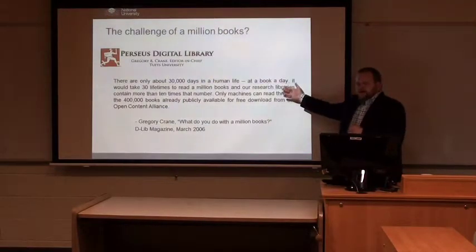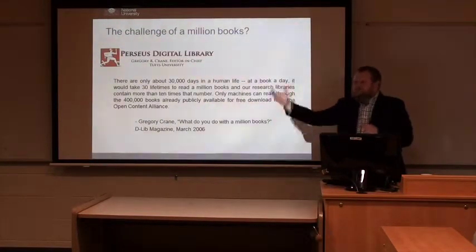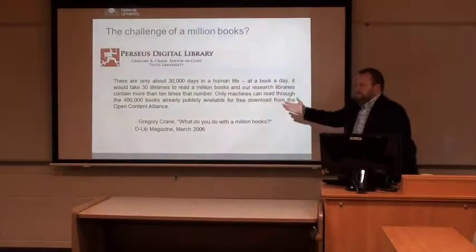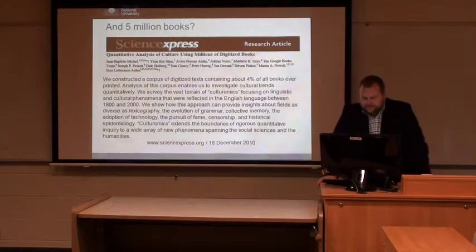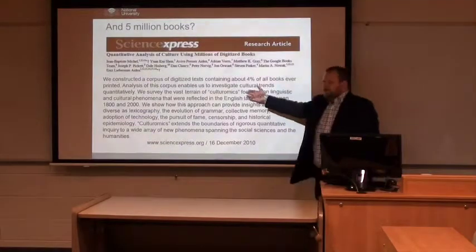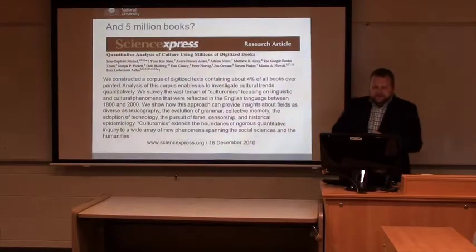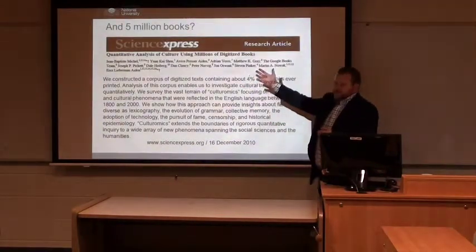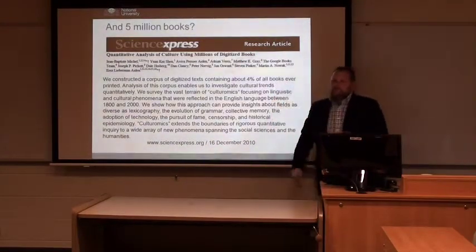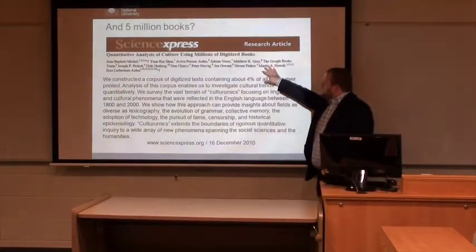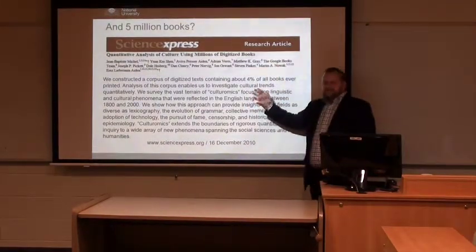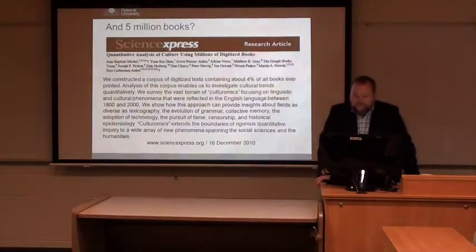Crane makes the point that close reading won't help, and that only machines can read through the books that are readily available. So what does that mean? When machines are doing this reading, we're giving agency to a computer — this idea of reading is fundamentally changed. One way this has been addressed is the birth of the field called culturomics. This is a direct outcome of the Google Books project, led by Jean-Baptiste Michel, a data scientist, and Erez Lieberman Aiden, a computational biologist, covering cultural trends over time.